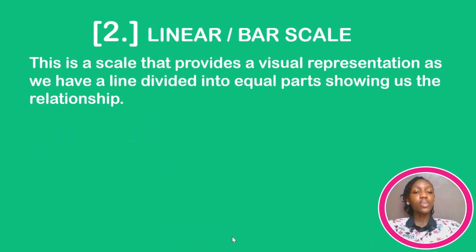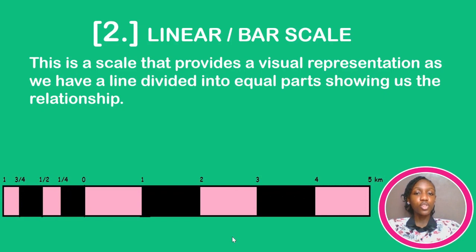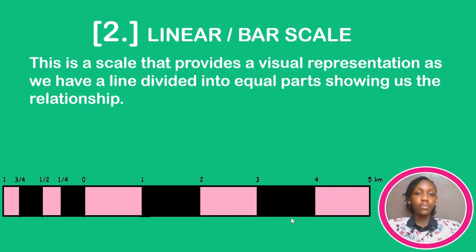The next type is a Linear or Bar Scale. This scale provides a visual representation, with a line divided into equal parts showing us the relationship. The word 'linear' just means a straight line, and that's how you see it in your objectives. It won't be as beautiful as the example shown here, but the one in your practicals looks decent. Again, the looks don't matter.